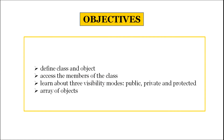You would be able to identify class and object, access the members of the class, learn about three visibility modes — public, private and protected — and array of objects. We are surrounded by different kinds of objects.